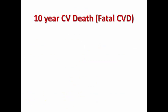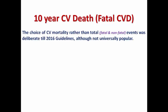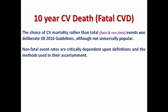One famous terminology extensively used in the 2016 cardiovascular prevention guidelines is the 10-year risk of fatal cardiovascular disease. The choice of mortality rather than total events — including both fatal and non-fatal — was deliberate until 2016 but was not universally popular; it was rejected by many physicians because it omits non-fatal events. The problem was that non-fatal events were critically dependent on definition and the methods used in their ascertainment, which is why only the risk of fatal cardiovascular events like fatal MI or fatal stroke was included.